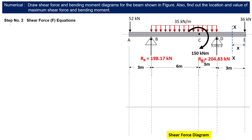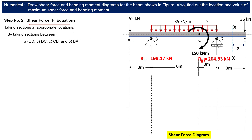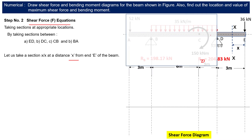Now we calculate the shear force. We take sections between ED, then DC, then CB, and then BA — four sections in total. We take a section at a distance x from the free end E. The section XX is only valid between E and D, so we are considering only the portion beyond D as a free body diagram.